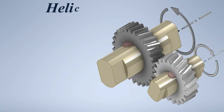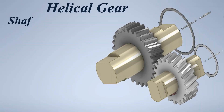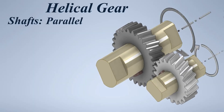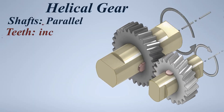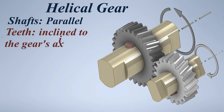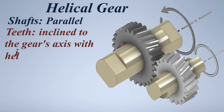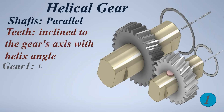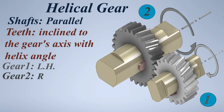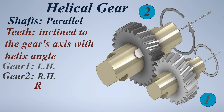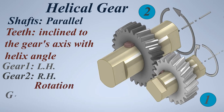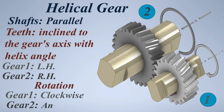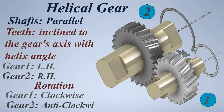Helical gear. Shafts: parallel. Teeth: inclined to the gear's axis with helix angle. Gear 1: left hand. Gear 2: right hand. Rotation — Gear 1: clockwise, Gear 2: anticlockwise.